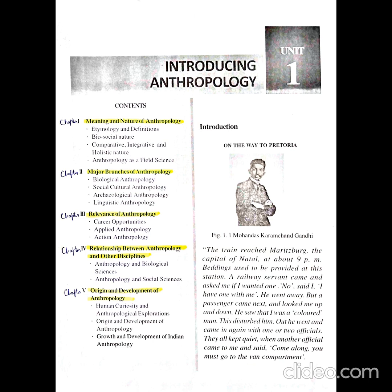In this chapter, we came to know the etymological meaning of Anthropology and the three unique characteristics. First, Anthropology has a bio-social nature. Second, Anthropology has a comparative, integrative, and holistic nature because it studies humans in totality. Third, Anthropology is a field science.